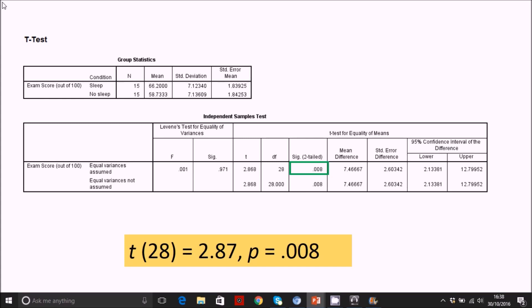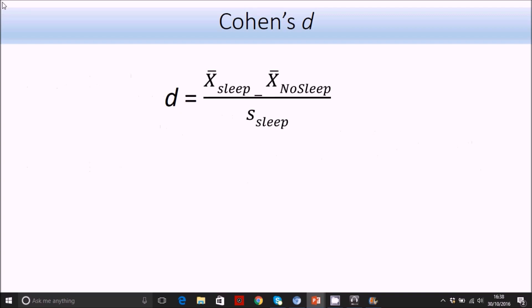The effect size we're going to use is Cohen's D. We'll use a slightly simplified form of Cohen's D, and this is the one that Andy Field uses in his book as well. It just illustrates what Cohen's D is actually doing here.